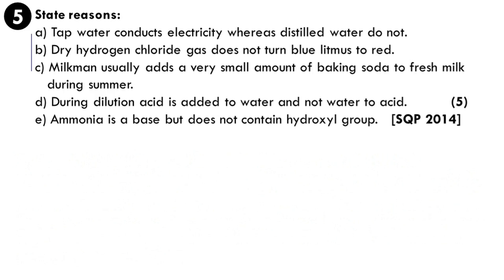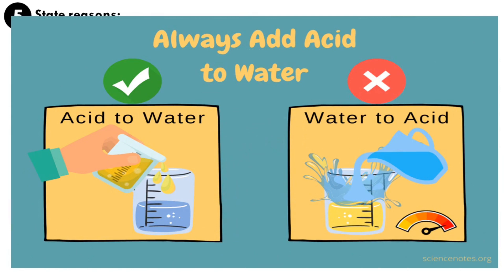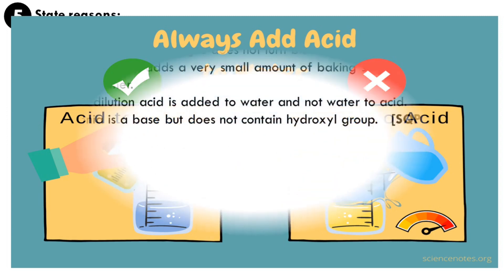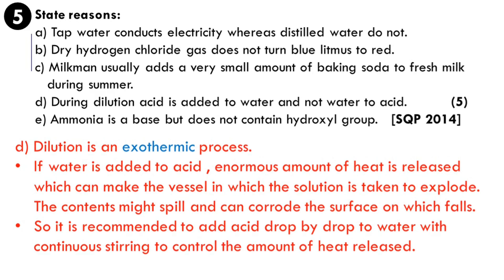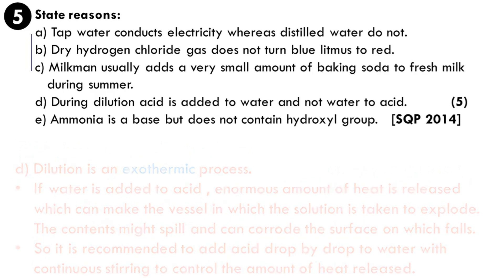Sub-question D: during dilution, acid is added to water — not water to acid. Dilution is an exothermic process. If water is added to acid, an enormous amount of heat is released, which can cause the vessel to explode and the corrosive acid to spill. Therefore, acid should be added to water drop by drop with continuous stirring, so the heat released can be controlled gradually.